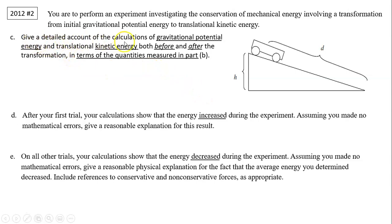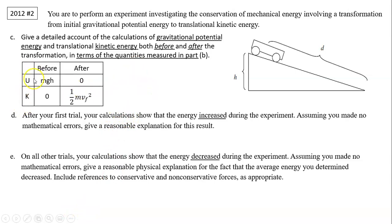Next, give a detailed account of the calculation of gravitational potential energy and kinetic energy. You have before and after, so four quantities: gravitational potential energy before and after, and kinetic energy before and after. You measured h, d, and t. Before the transformation, U = mgh because the car is at rest so KE = 0. After the transformation, U = 0 because it's at the bottom of the incline, and KE = ½mv_f².